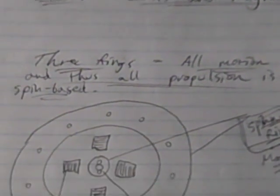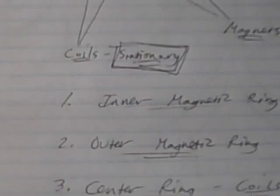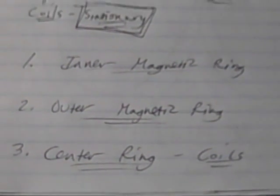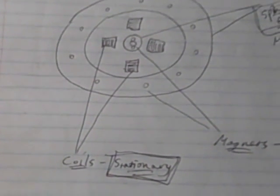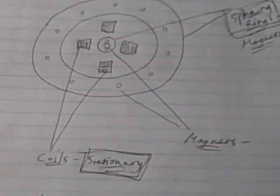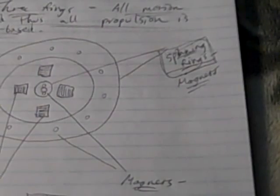There might be more to it than that, but I think that's the basic principle. What you have is an inner magnetic ring, an outer magnetic ring, and then a center ring of coils. Your coils are going to be stationary in the center between these two magnetic rings. So you've got magnets on the outside, magnets on the inside.